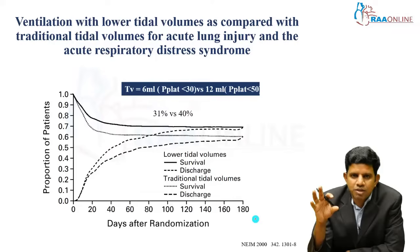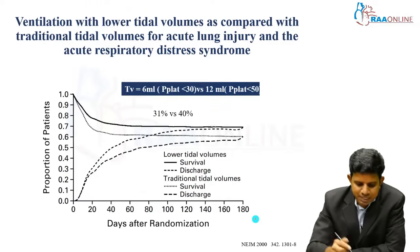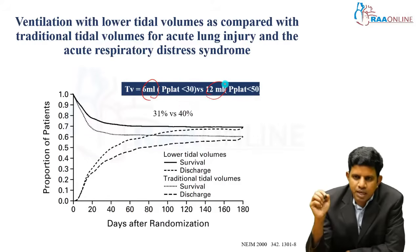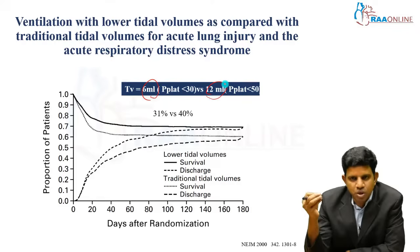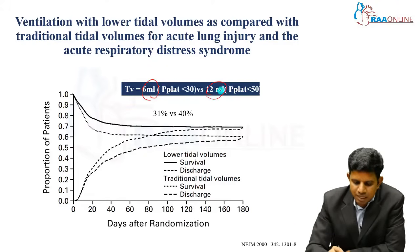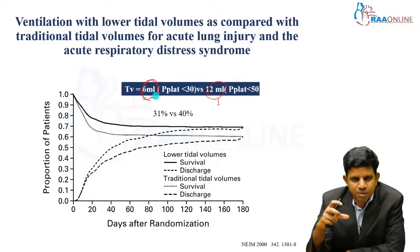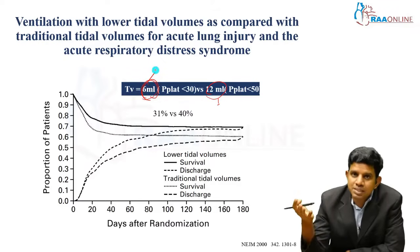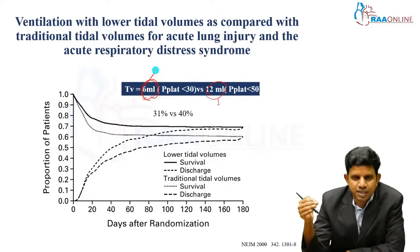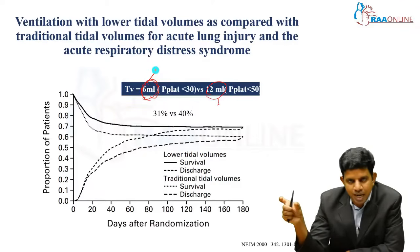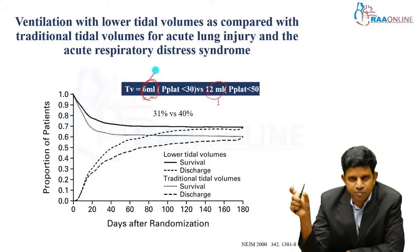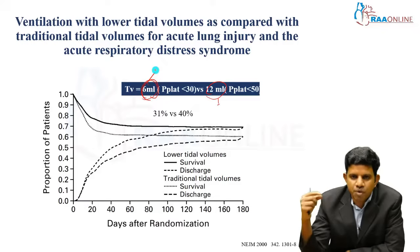In this study, they compared different tidal volumes: 6 ml/kg versus 12 ml/kg. In the 12 ml/kg group, if the plateau pressure exceeded 50, they decreased the tidal volume down to 10 ml/kg. In the 6 ml/kg group, if the plateau pressure exceeded 30, they decreased the tidal volume down to 4 ml/kg. So one group received 4–6 ml/kg with plateau pressure less than 30, and the other received 12 ml/kg with plateau pressure less than 50. They found that patients receiving 6 ml/kg with plateau pressure less than 30 had better survival and better outcomes.